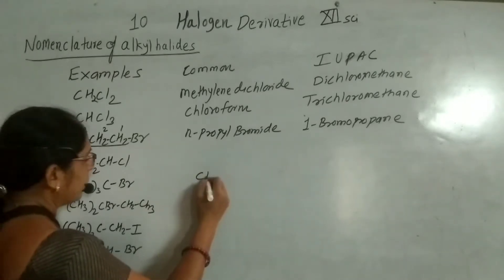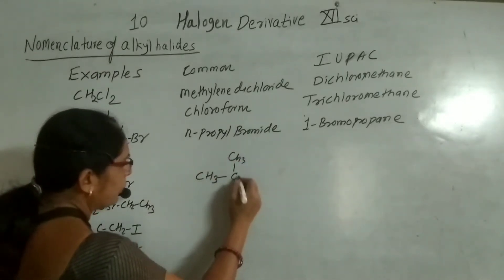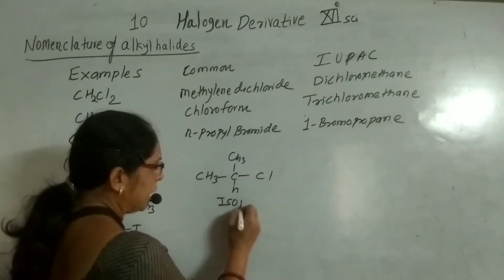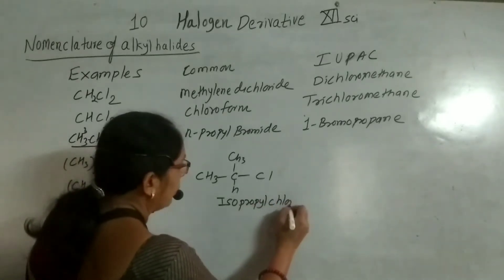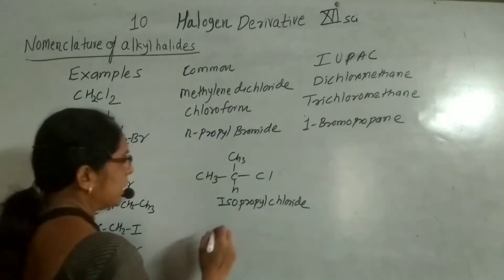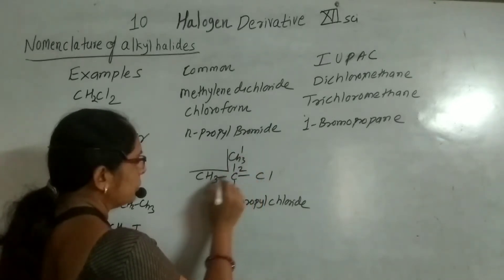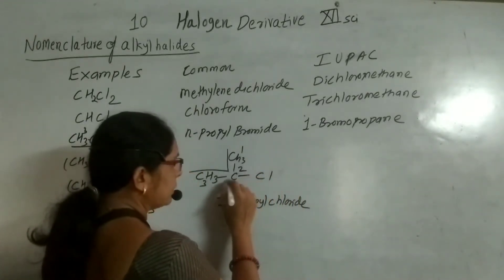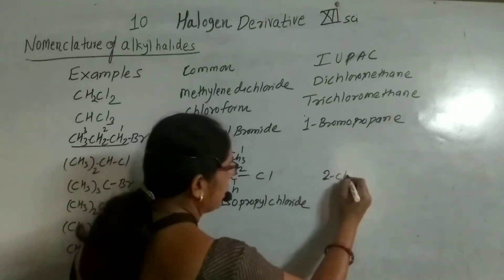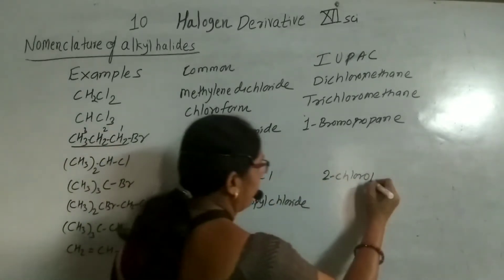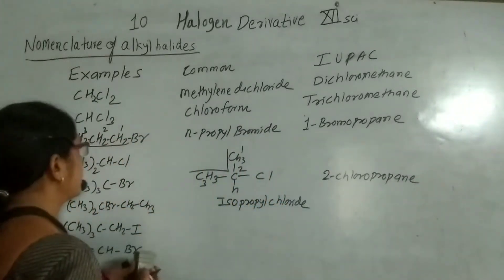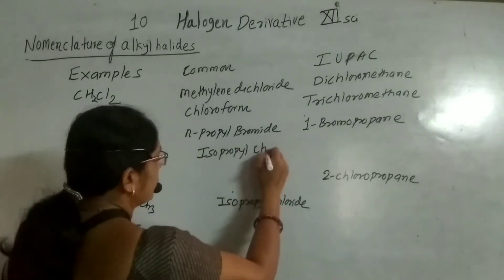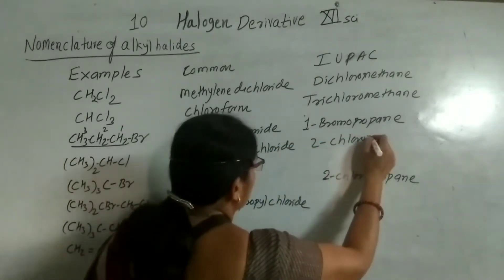The next example: the carbon is attached with 2 methyl groups, 1 hydrogen, and 1 chlorine. When a carbon has 2 methyl groups and 1 hydrogen, this is the condition of iso — so it is iso. It has a total of 3 carbons, so its common name is isopropyl chloride. For the IUPAC name: numbering gives chlorine at position 2, the parent is propane, so its IUPAC name is 2-chloropropane.